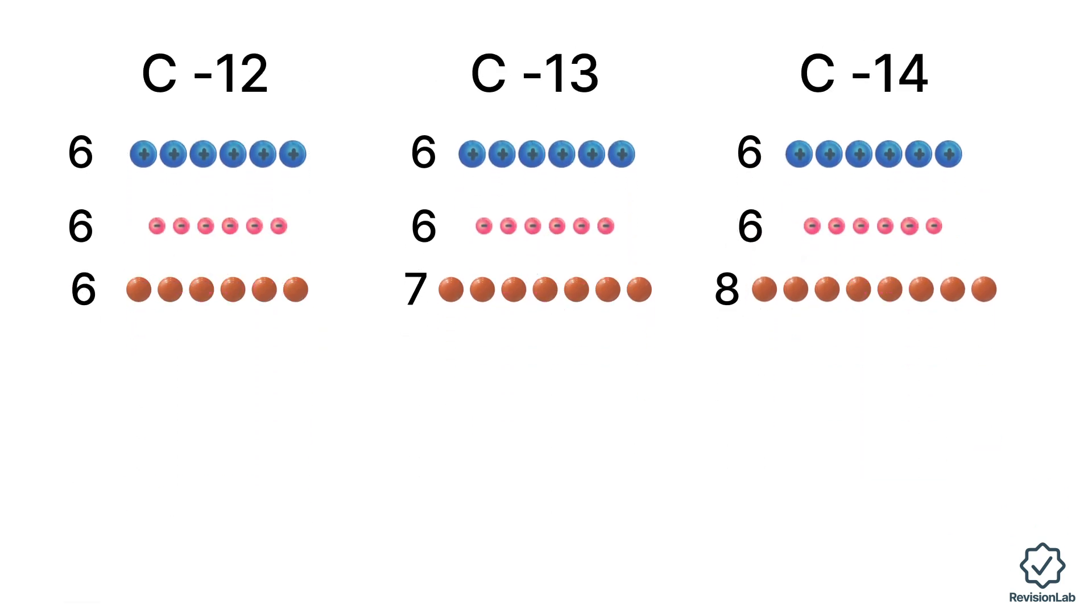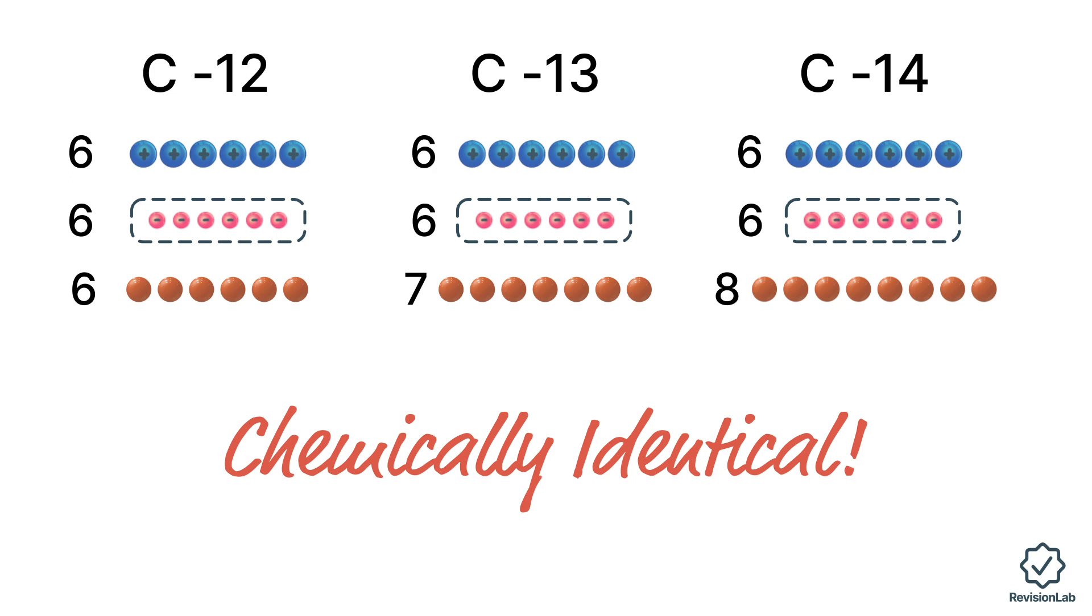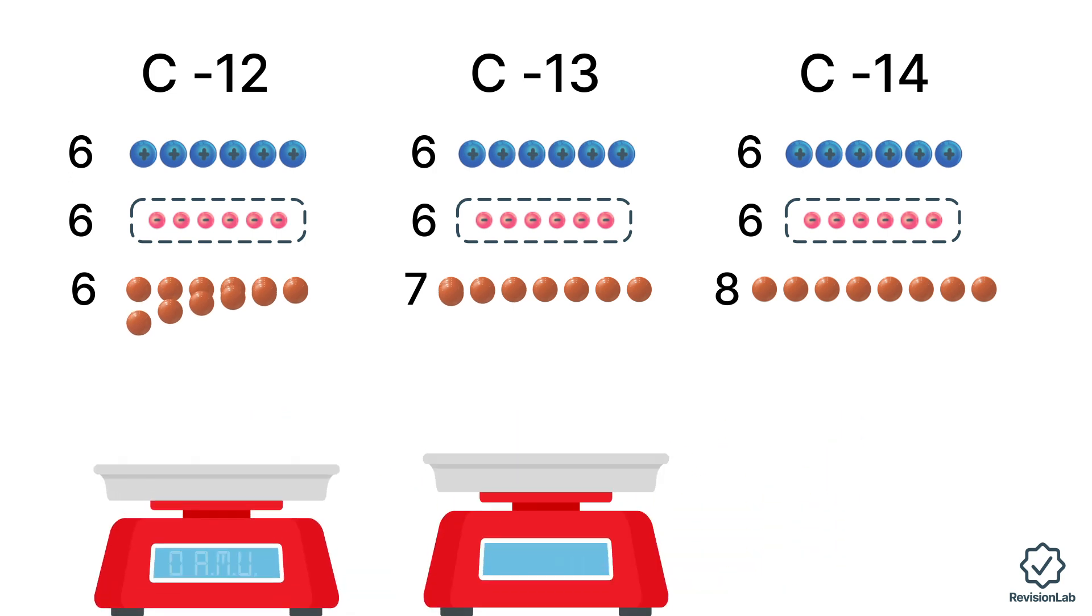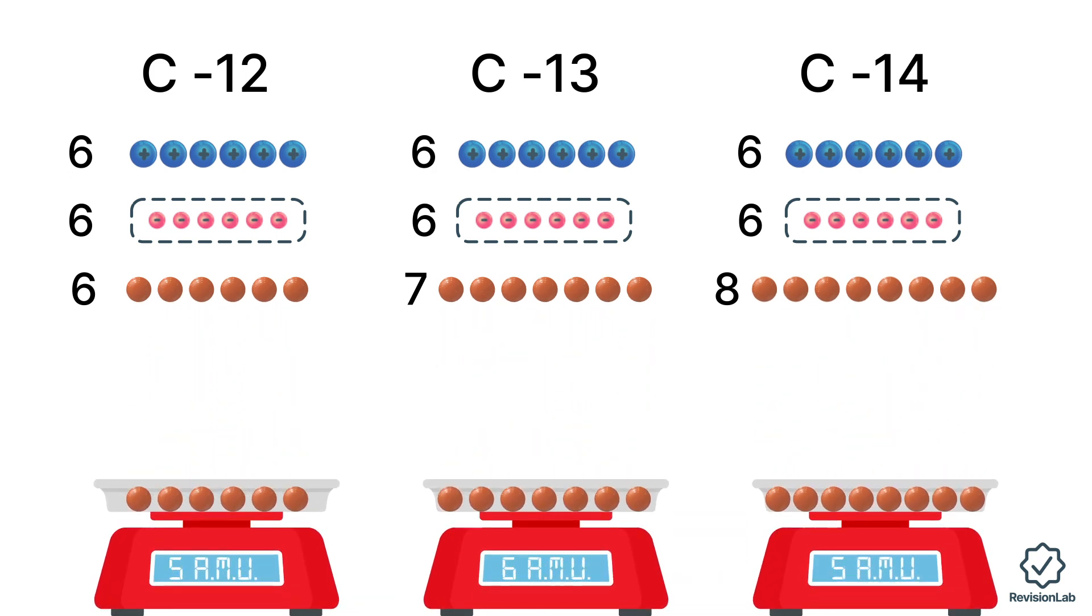Isotopes of the same element are chemically identical since they have the same arrangement of electrons, but because they have different numbers of neutrons they will have different physical properties such as density.